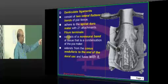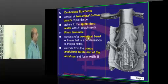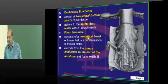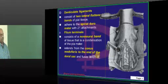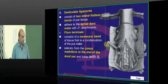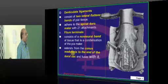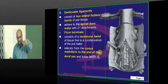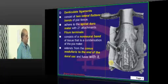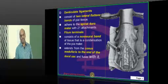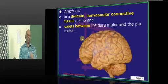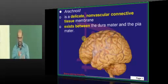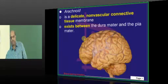What is filum terminale? Filum terminale is also a modified form of pia tissue only. It is a non-neural band of tissue which is a condensation of the pia mater. It basically extends from the conus medullaris, which is the tip of the spinal cord, down to the end of the dural sac, fusing with it. That is how the spinal cord ends — pia terminale continues down as pia tissue extension, ending into the dural sac.